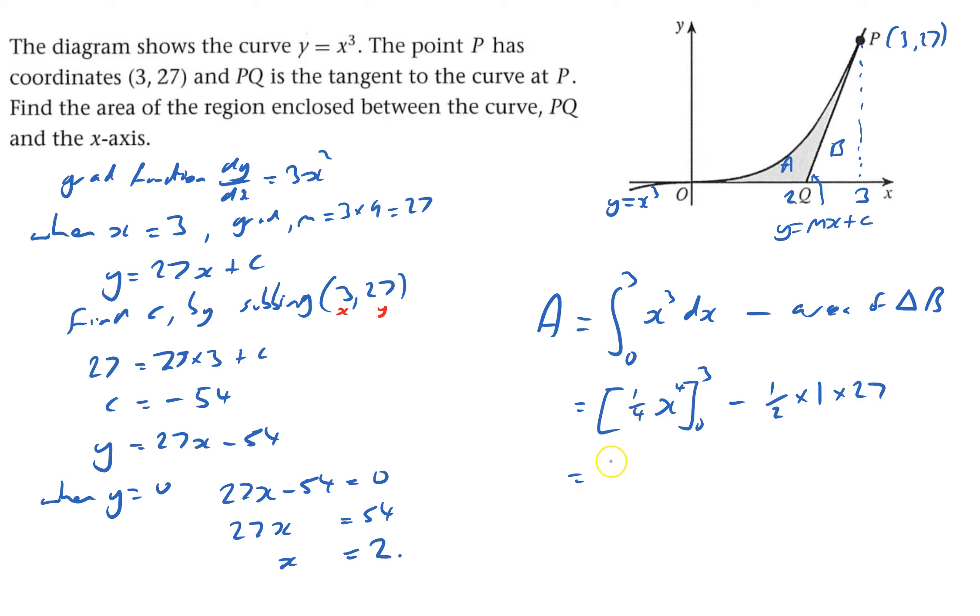Put in 3, so that will equal a quarter of 3 to the power of 4. Take away, put in 0, that'll be 0, and then minus...